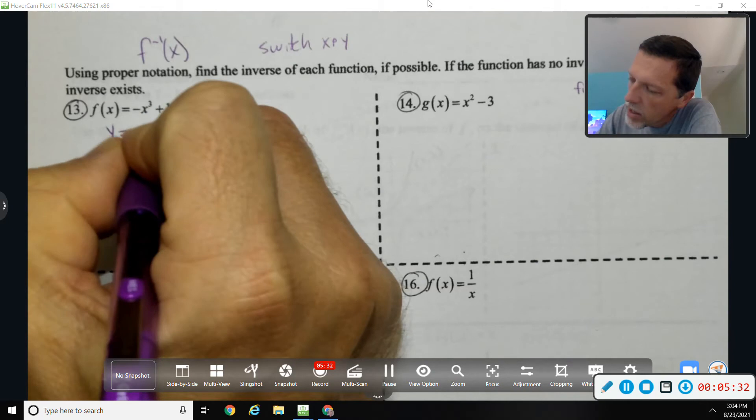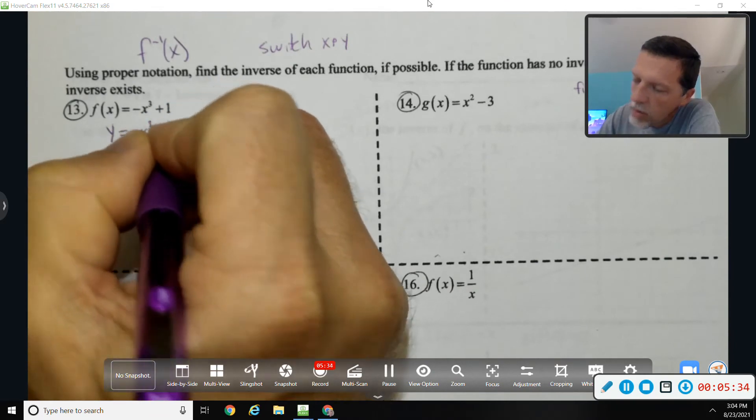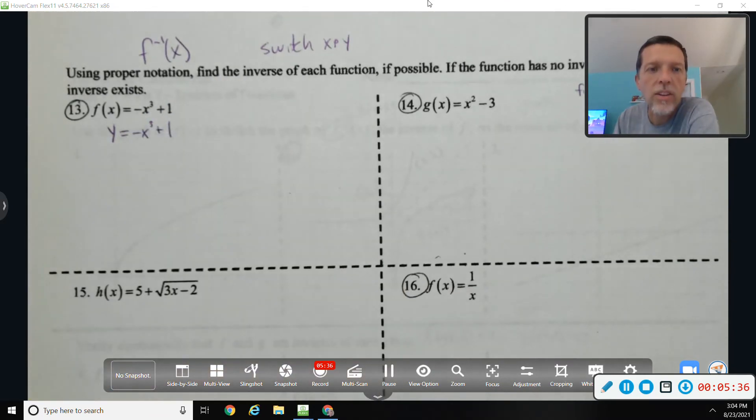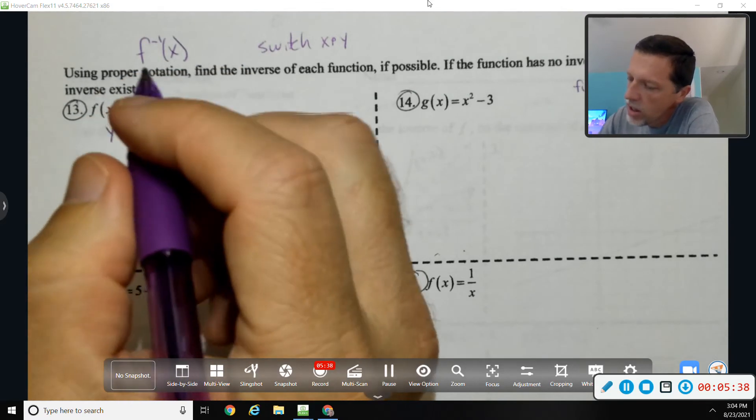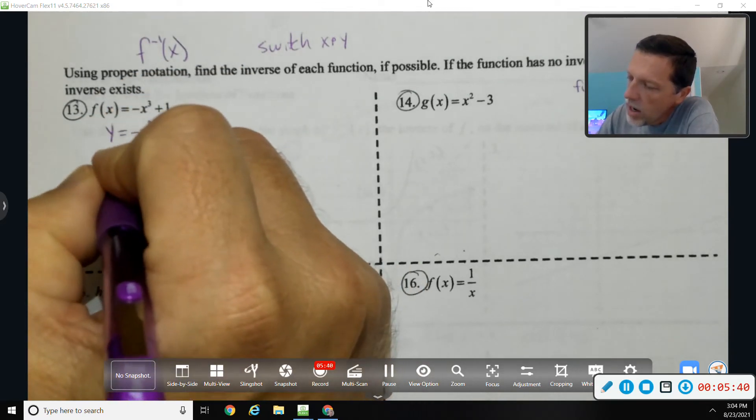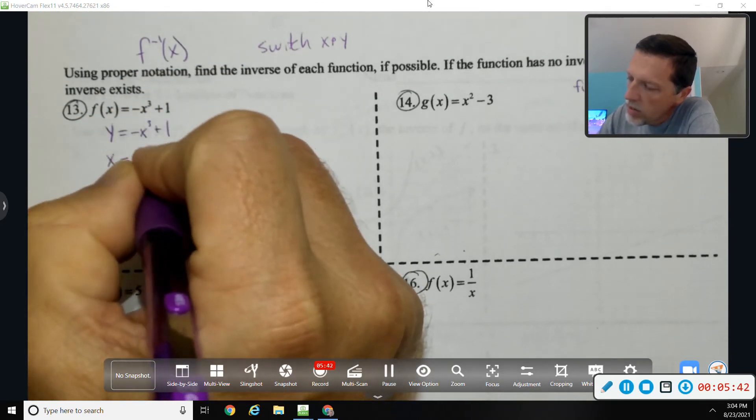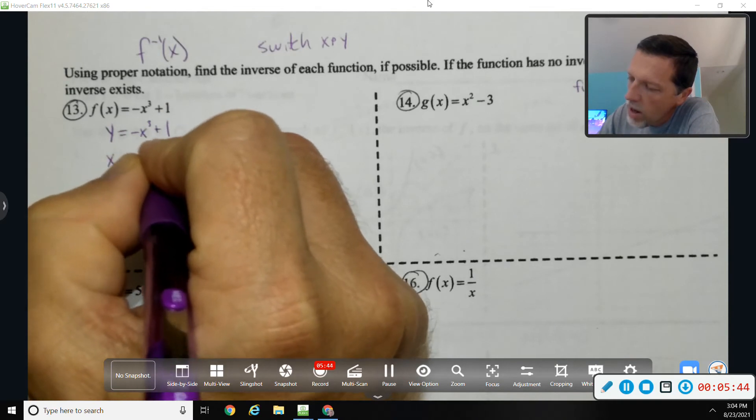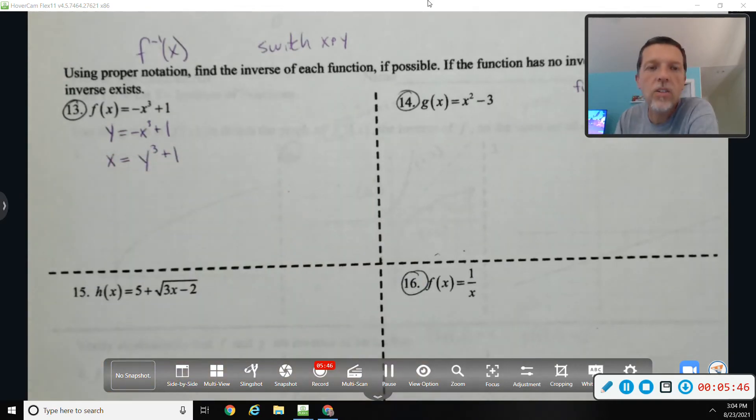So the big deal is to switch x and y. So y equals negative x cubed plus one. That's not a switch—that's just changing the notation. In place of y I put x, in place of x I put y, and then I need to solve that for y.